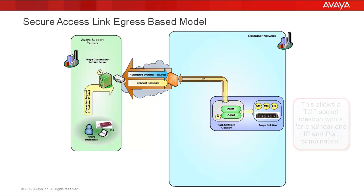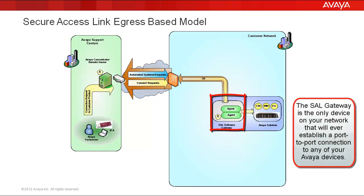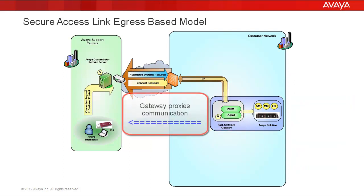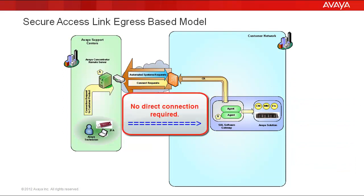It will be able to form a TCP socket with a far-end, near-end IP and port combination. With Secure Access Link, this does not occur. Rather, the Secure Access Link gateway is the only device on your network that will ever establish a port-to-port connection to your Avaya devices, and then proxy all communication back to Avaya for these given devices. And it does so in a way that even a direct connection to the SAL gateway is not required.